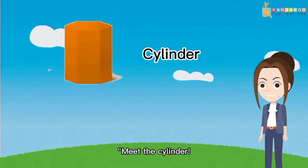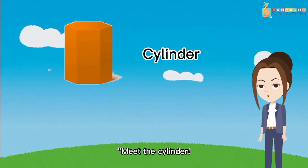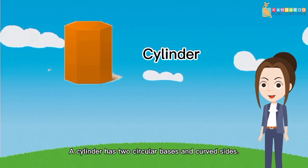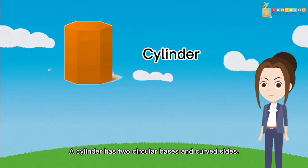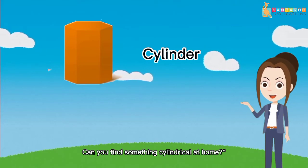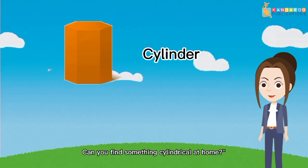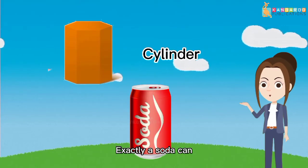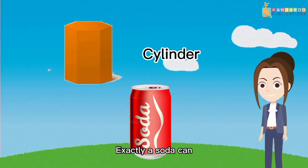Meet the cylinder. A cylinder has 2 circular bases and curved sides. Can you find something cylindrical at home? Exactly, a soda can.